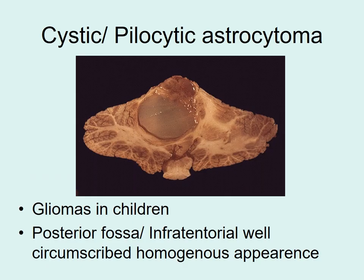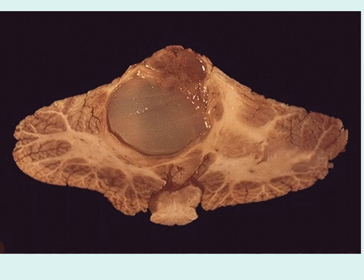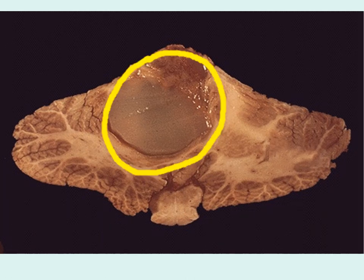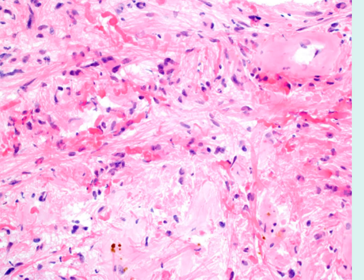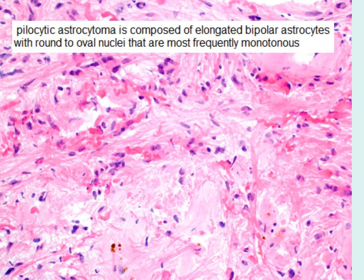Next is cystic or pilocytic astrocytoma. These are usually low grade, mostly occurring in children, and they occur in the posterior fossa. Examining it closely, it is well circumscribed with round margins and is homogeneous — the cut section has the same consistency and color throughout. Microscopically, there is very low cellularity with bipolar astrocytes with round to oval nuclei that are mostly monotonous, with no pleomorphism.